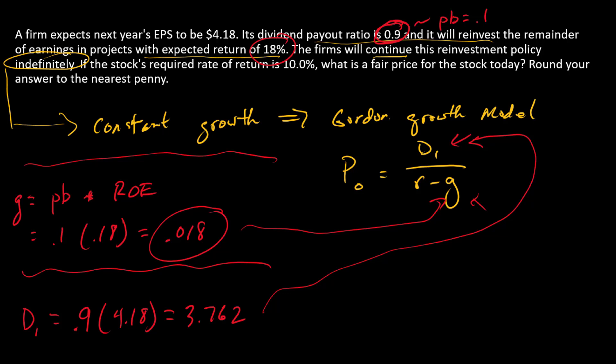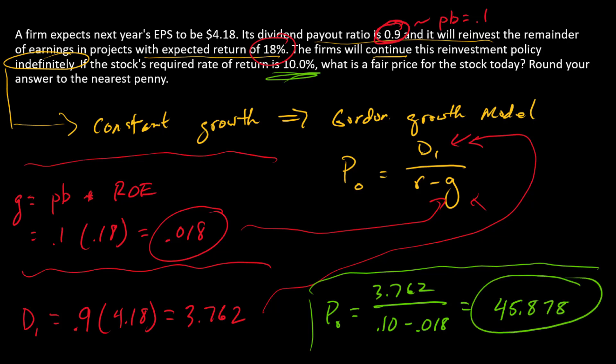So now we can work the problem. P0 is 3.762 divided by this discount rate of 10%. So 0.10 minus 0.018. And we have 45.878. There's the answer.